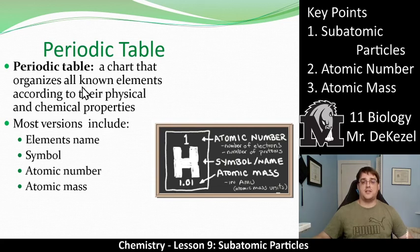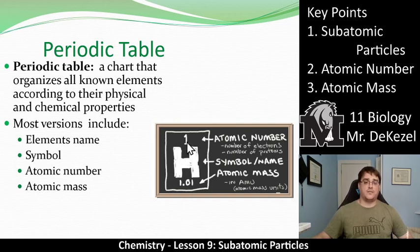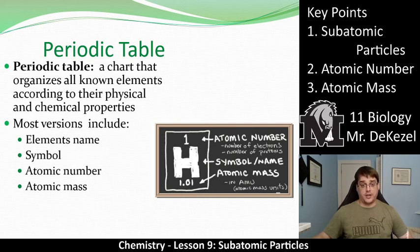The periodic table is a chart that organizes all the known elements according to their physical and chemical properties. I've given you a copy in your booklet. Most versions of the periodic table include in each box: the element name — this one doesn't show it, but it's hydrogen — the symbol H, the atomic number (number one), and the atomic mass (1.01).